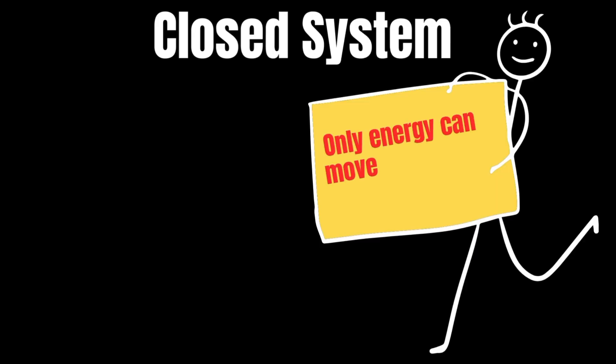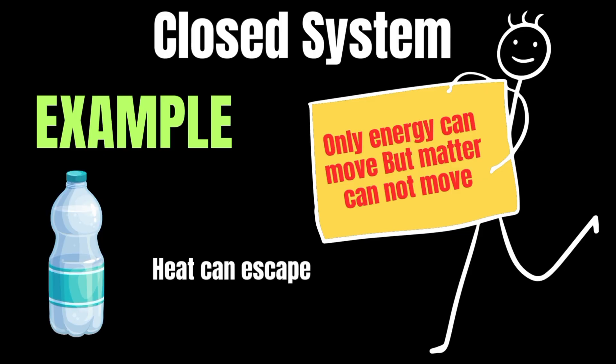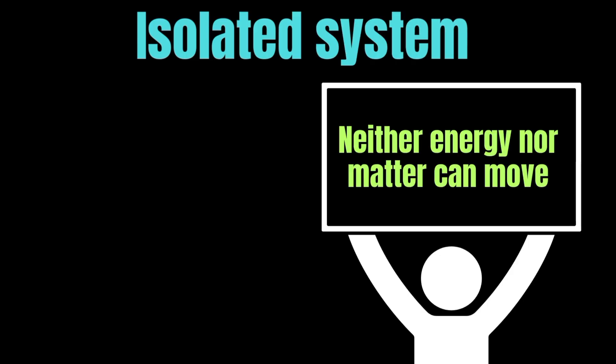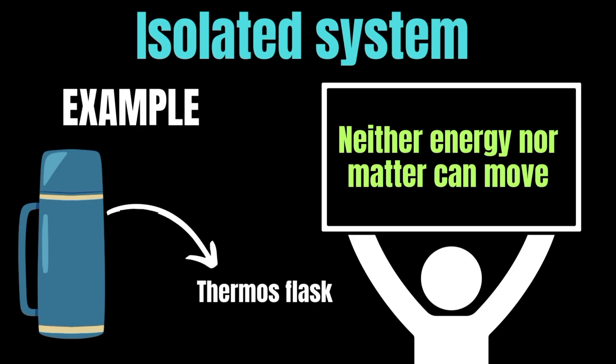In a closed system, only energy can move in and out, but matter cannot move. For example, in a closed bottle of hot water, heat can escape, but water stays inside. In an isolated system, neither energy nor matter can move in or out. A very common example is a thermos flask, where heat remains trapped inside and nothing enters or leaves the system.